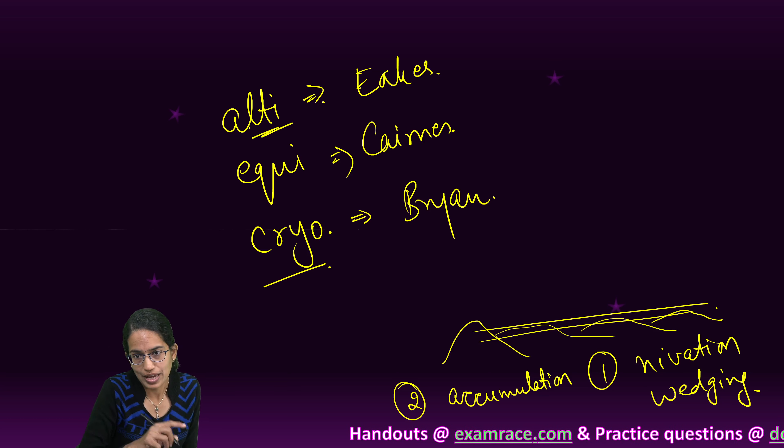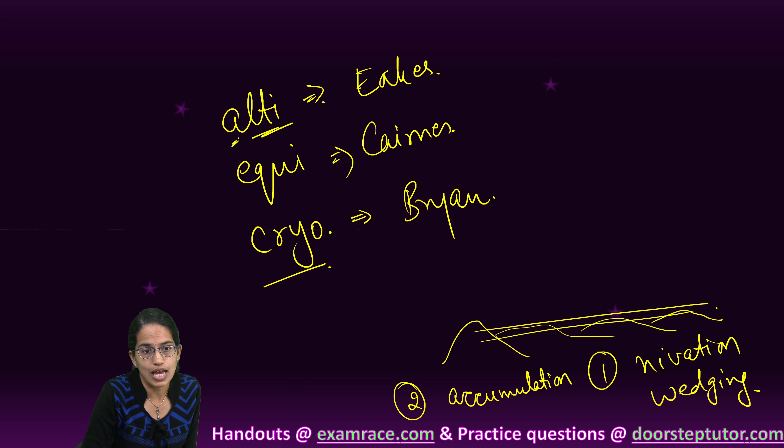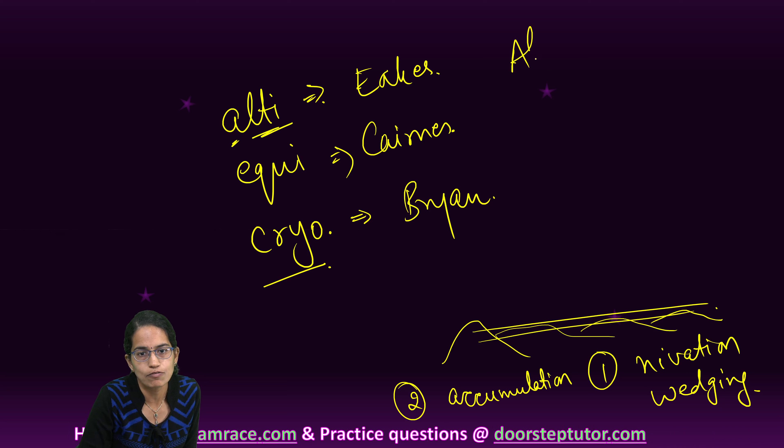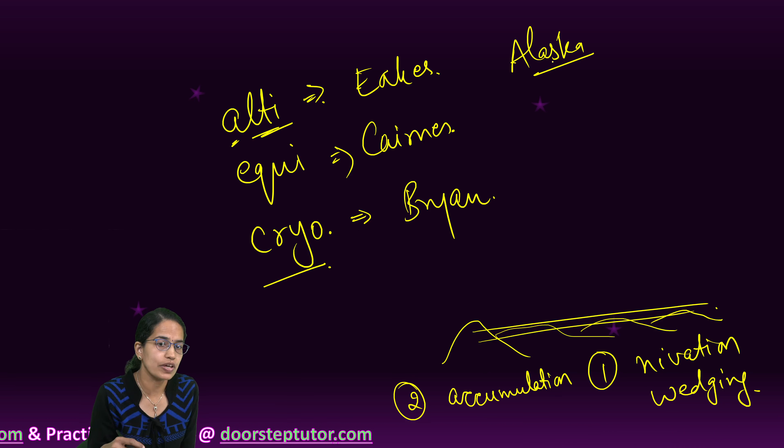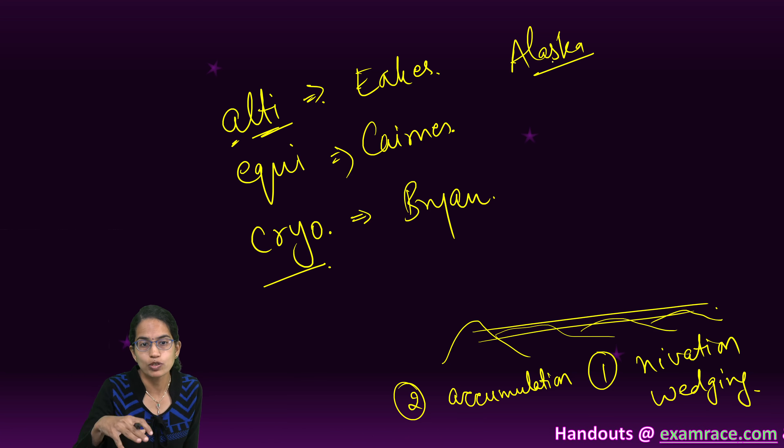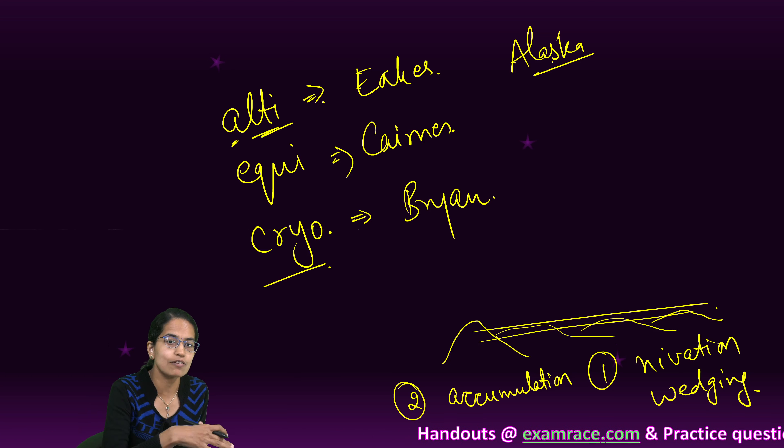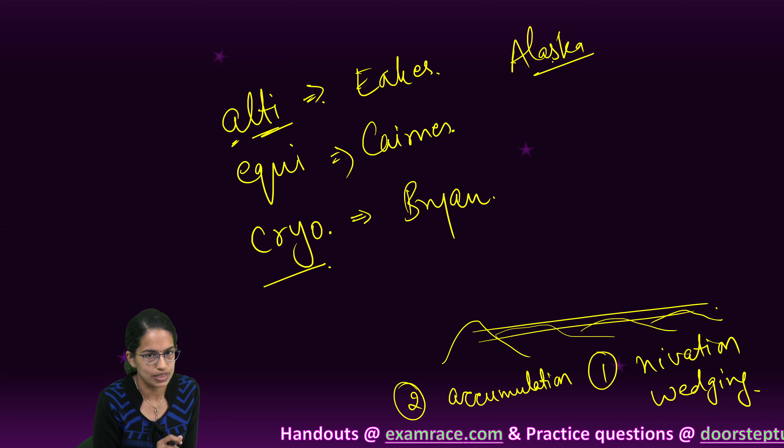Altiplanation, you can remember well - A for altiplanation and A for Alaska. It was mainly seen in the regions of Alaska where solifluxion is high and you have lots of freeze and thaw activity. This phenomenon was studied by Eakin there, and therefore this was known as altiplanation.